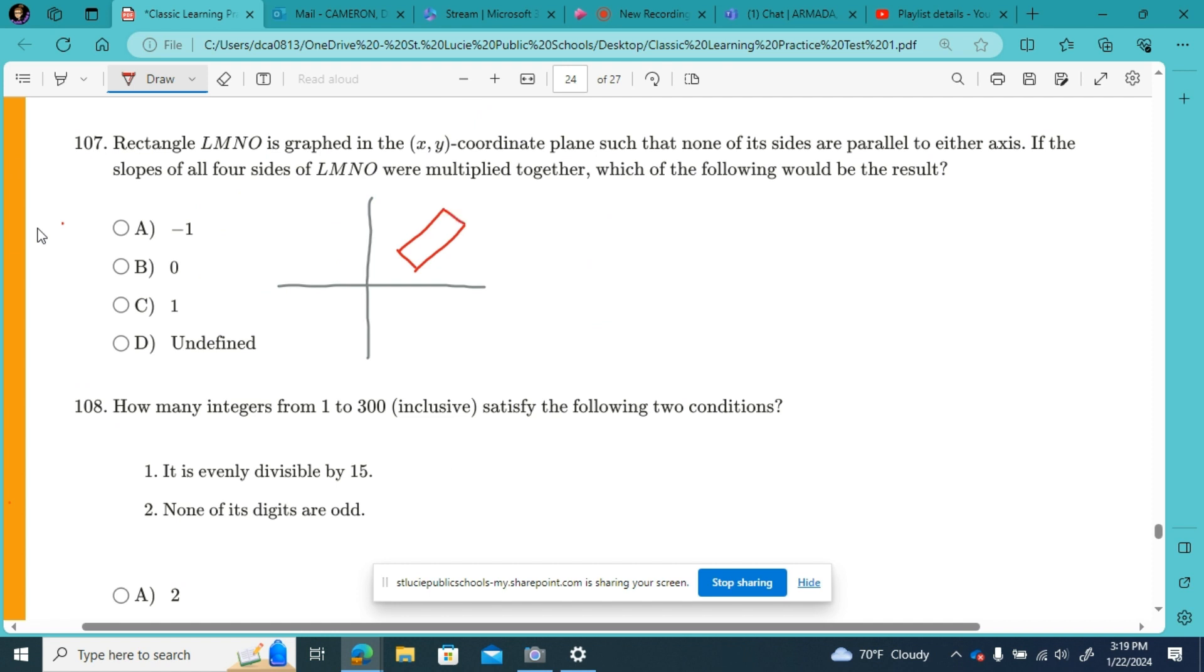And going this way, if we say our slope is positive 1, then this side of the rectangle across from it is also 1. And my slope of my other sides here would be negative 1 over 1, which is just negative 1 and negative 1. If the slopes of all four sides were multiplied together, which of the following would be the result? Well, that would be 1 times 1 times negative 1 times negative 1. My negatives would cancel out, and just multiplying 1 however many times is still just 1.